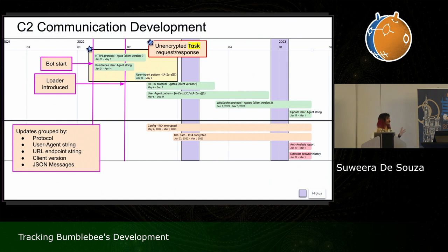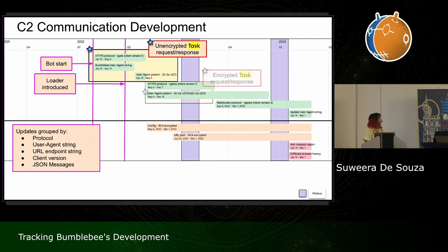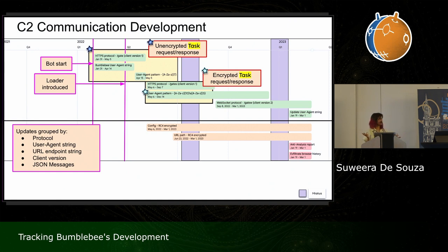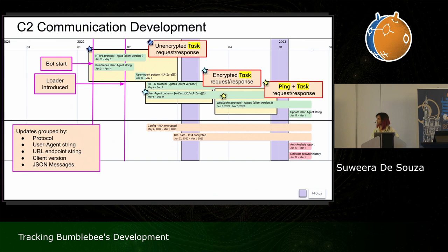That randomization was short-lived and they changed it further — randomizing the user agent even more and starting to use RC4 encryption on messages. The URL string changed from 'gate' to 'gate_S' — likely their way of saying 'secure.' Then, a month after coming back from their first hiatus, they switched the protocol altogether to WebSocket. The client version number reflected that, and the endpoint string changed from 'gate_S' to 'gate_W' — as we can guess what W means. This is also where they introduced the ping message.